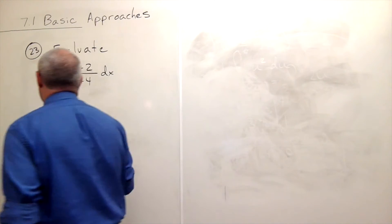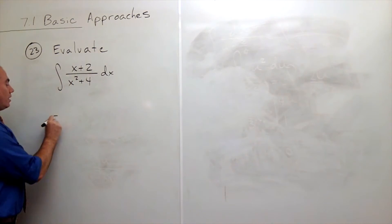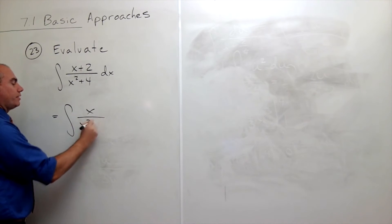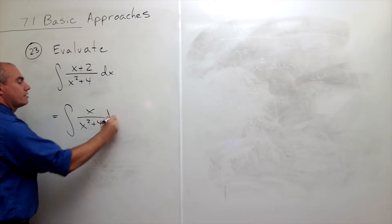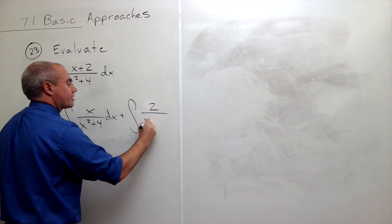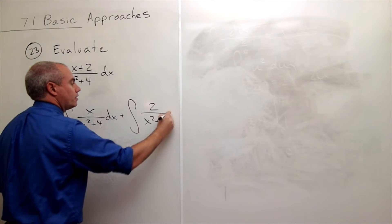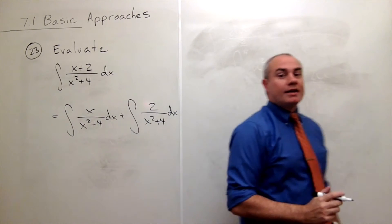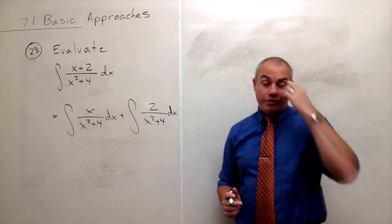So let me rewrite this thing as two integrals. I can write this as the integral of x over x squared plus 4 dx plus the integral of 2 over x squared plus 4 dx. Alright, now let's look at these two integrals individually.